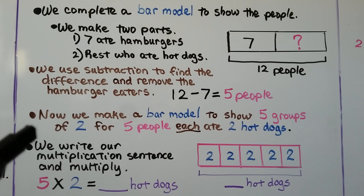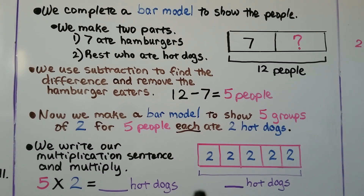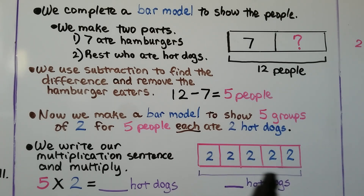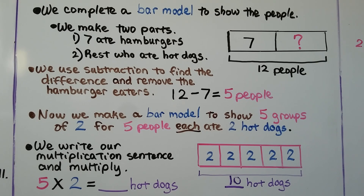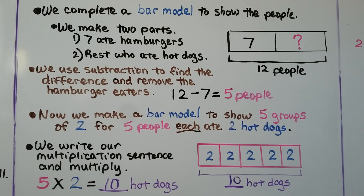Now we make a bar model to show five groups of two, since five people each ate two hot dogs. We've got five groups and we put a two in each group. We can write our multiplication sentence and multiply. We have five groups of two — we can skip count by twos: two, four, six, eight, ten. That's ten hot dogs. Our multiplication sentence is five times two is equal to ten hot dogs in all.